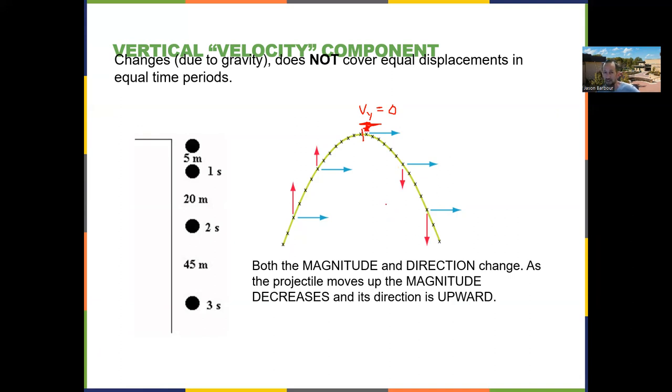There's also some symmetry here and that's a little bit more advanced, but the magnitude of this velocity here is the same as the magnitude here. In other words, the speed, the vertical speed is the same here as here and here as here because those are at the same height.